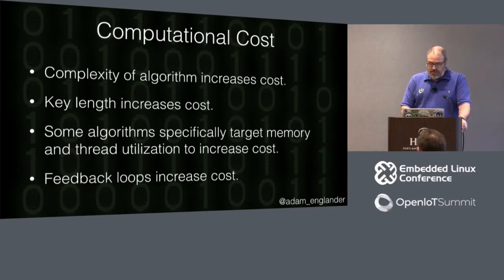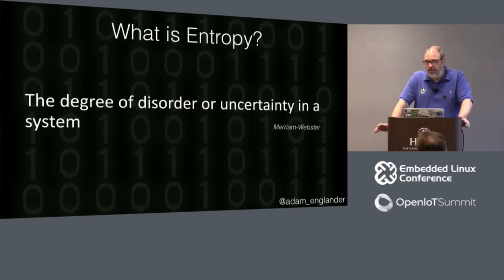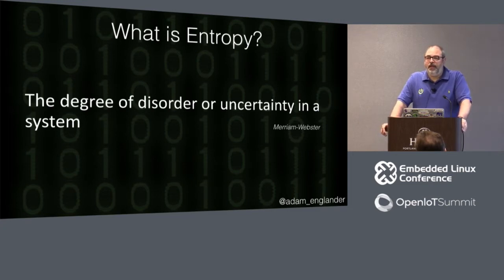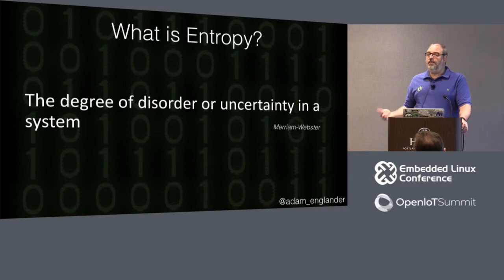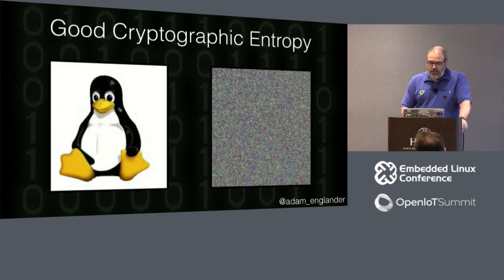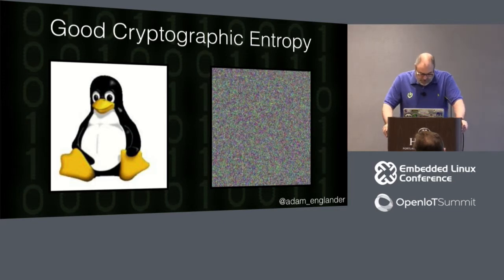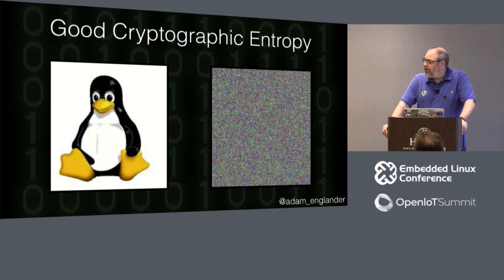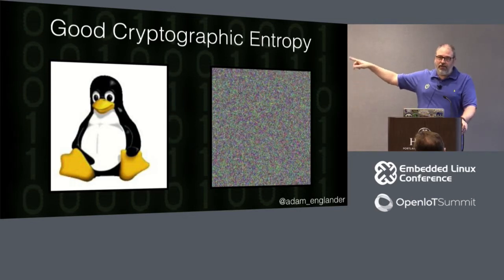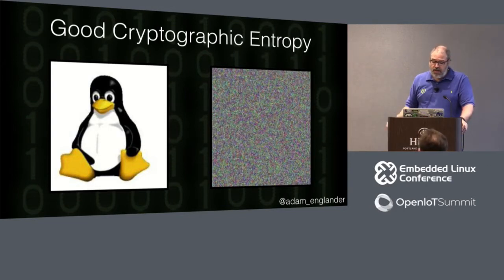So what is entropy? Entropy is the key to cryptography. Merriam-Webster defines it as the degree of disorder or uncertainty in a system. If someone can predict your data — if you have predictability — then you're easy to crack. Here is a good example of entropy: if you look at both of these images, one is encrypted and one is not. This is Tux, and everybody loves Tux. There is no way — I mean, I've actually tried staring at it — you might find some pictures but it's never been a penguin.